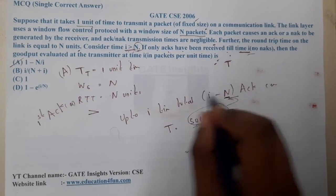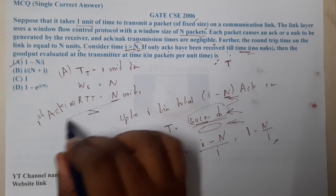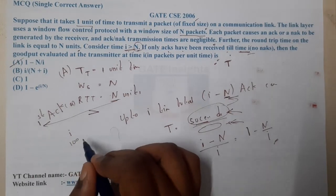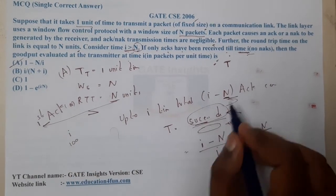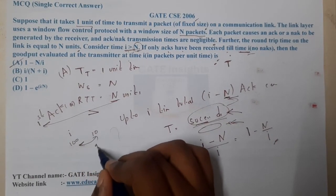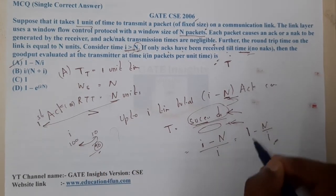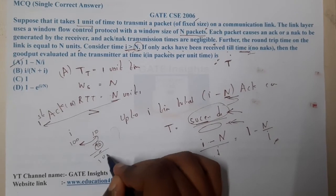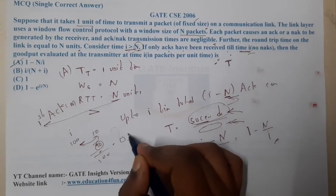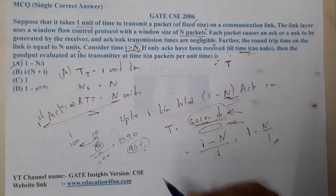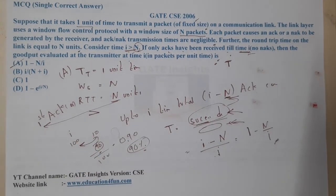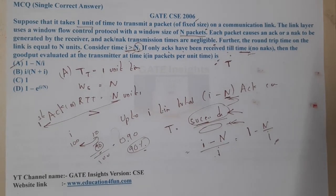For example, if i is 100 and N is 10, then successful deliveries are 90, giving a throughput of 90/100 = 0.90, which is 90%. When numerical values are given it becomes straightforward — just substitute and get the answer.